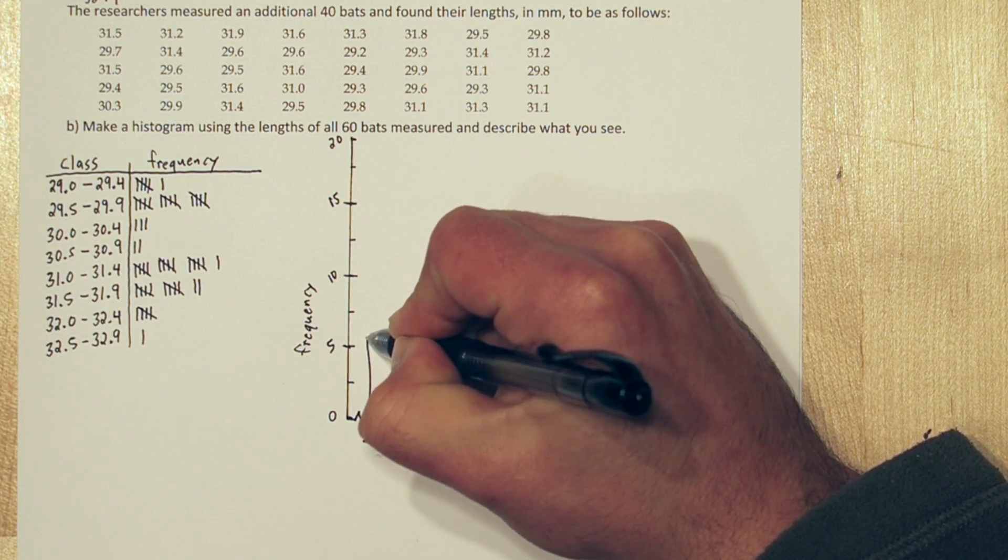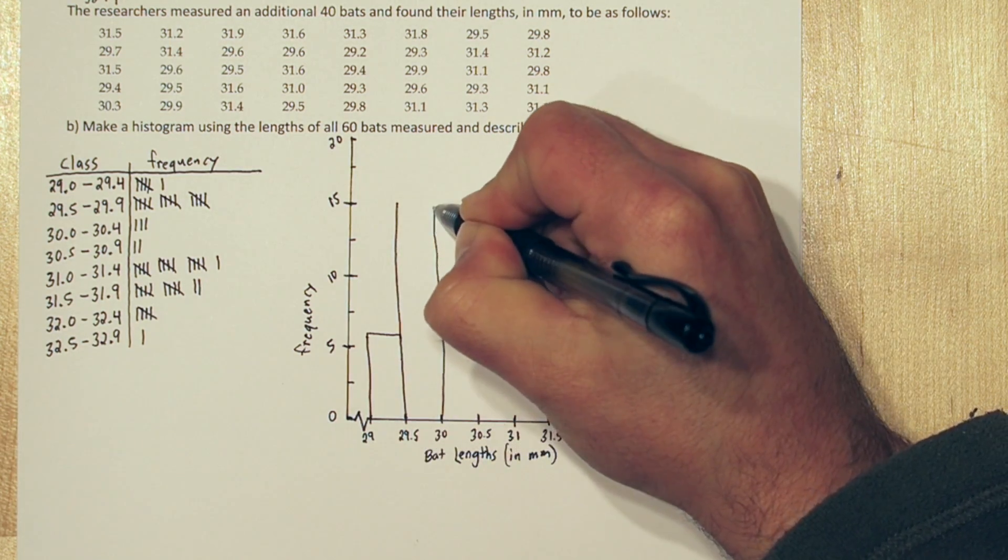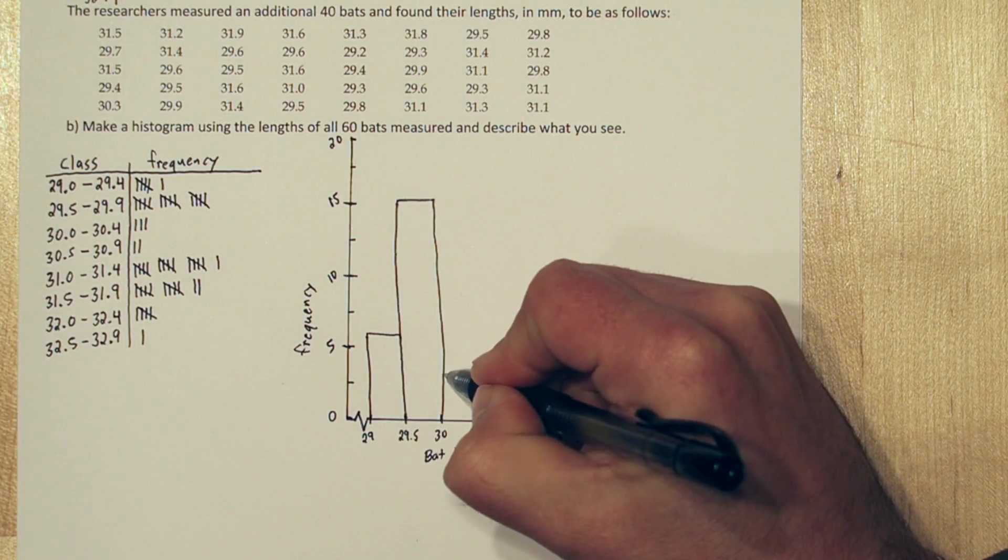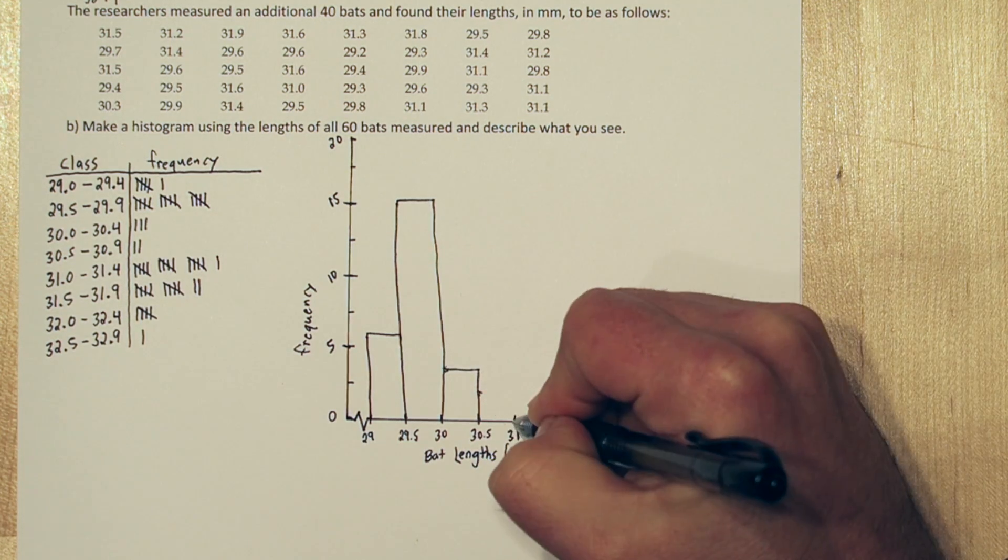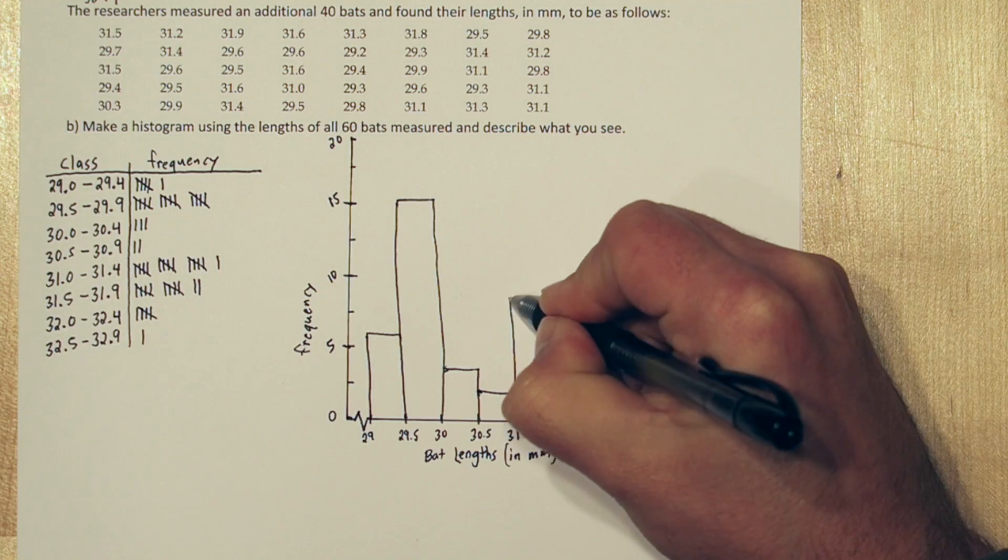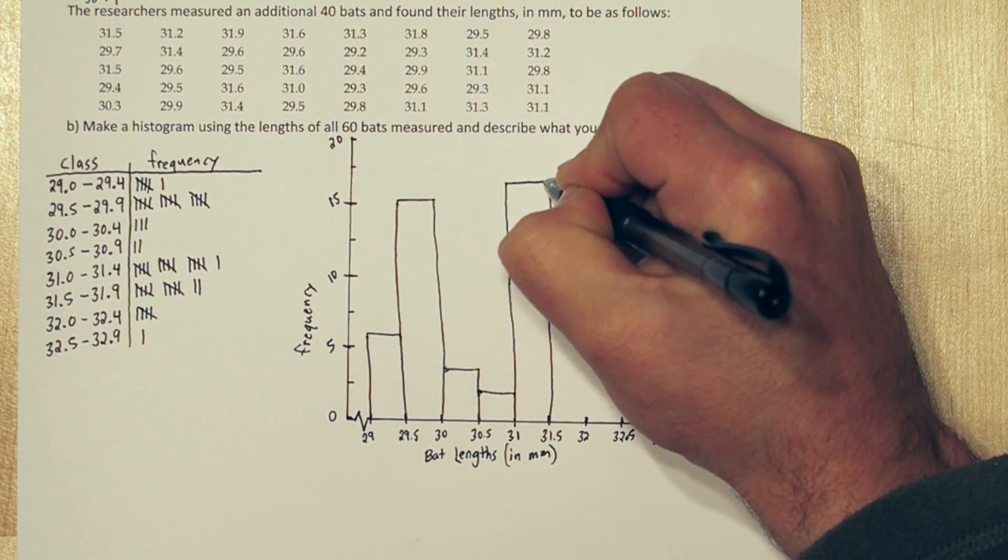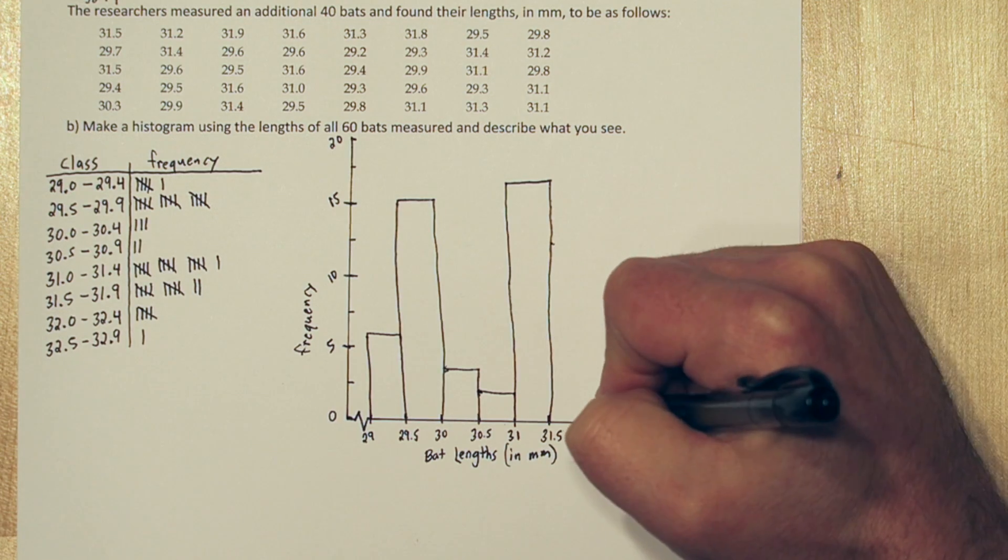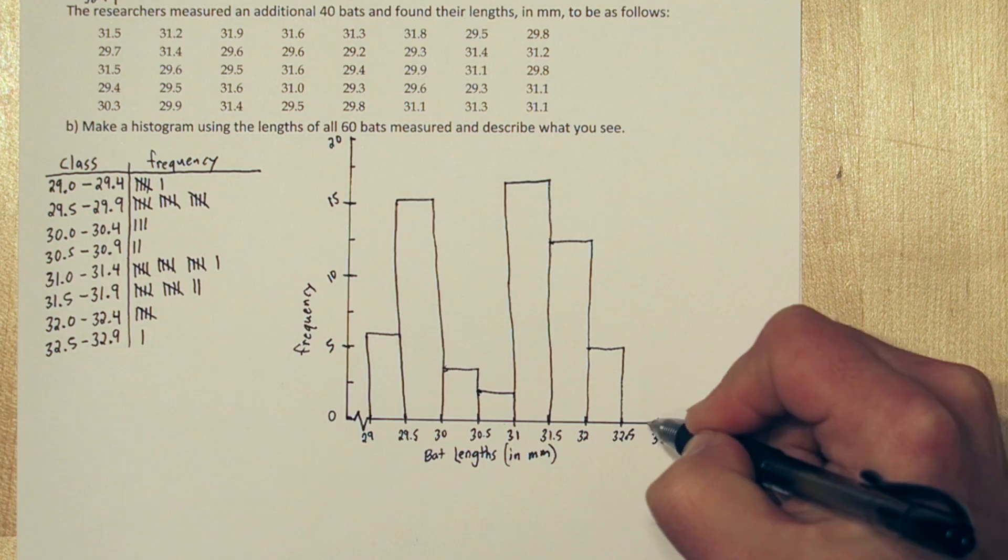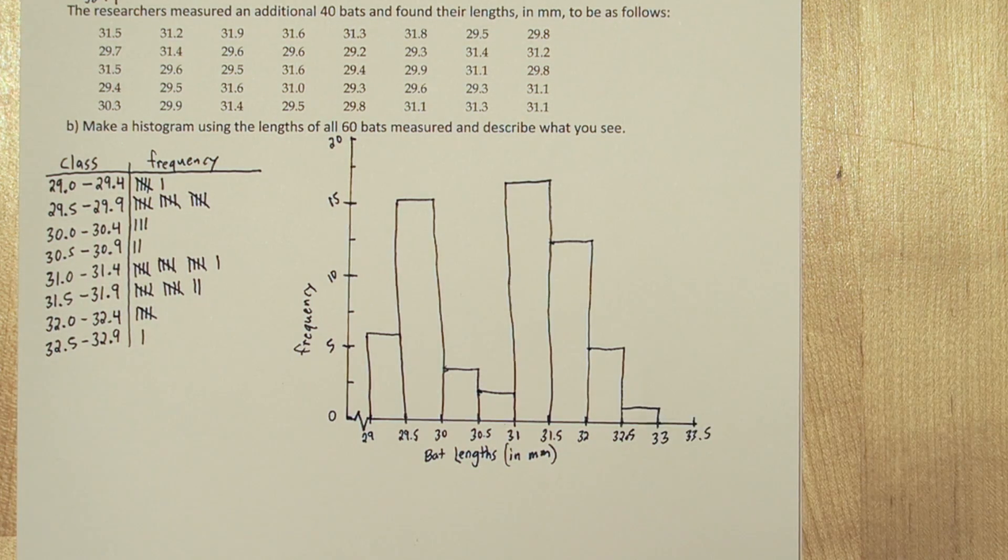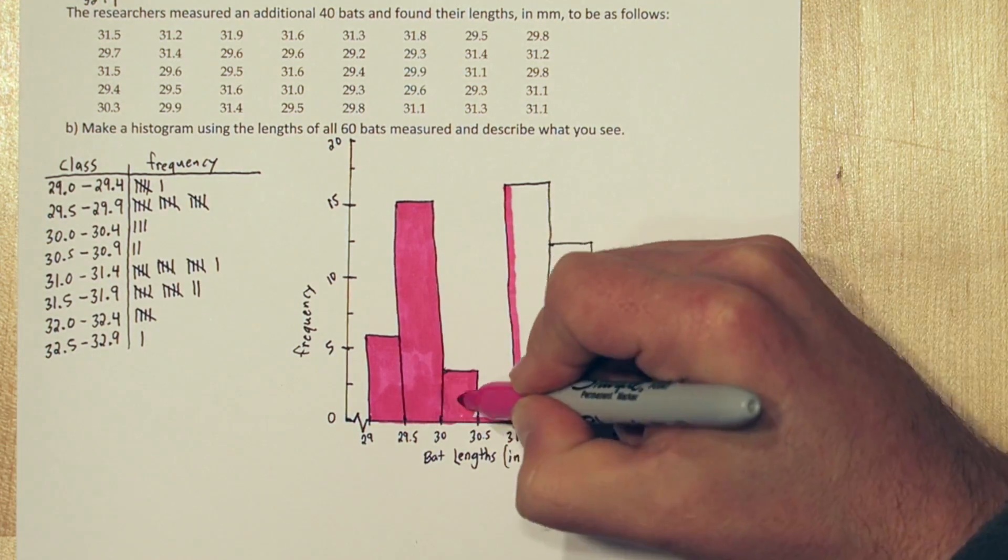So our first class has a frequency of 6, so we'll go up to 6. Then our second class has a frequency of 15. For bats between 30 but under 30.5 millimeters, we had 3. Then 2 in the next class, 16 in the next class, then 12, then 5, and finally 1. We have a little extra space on the right, that's okay. And we'll add color to make it a little easier to see.